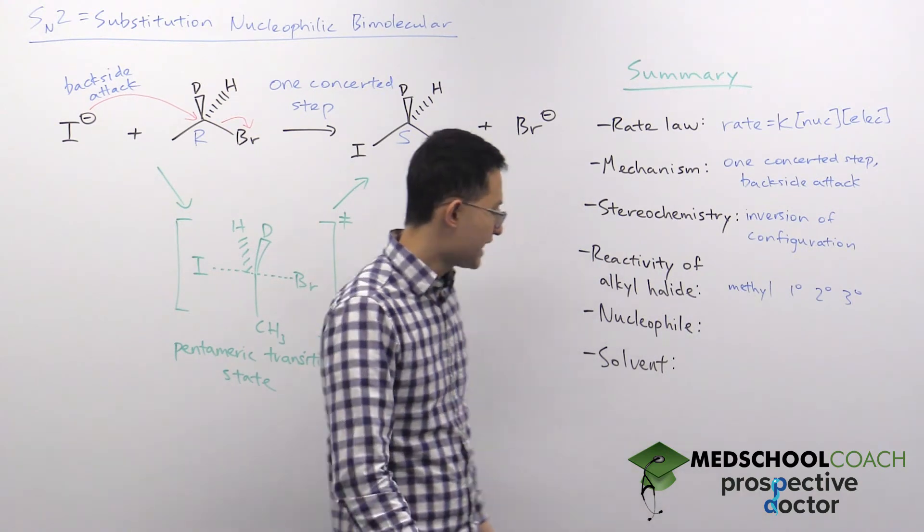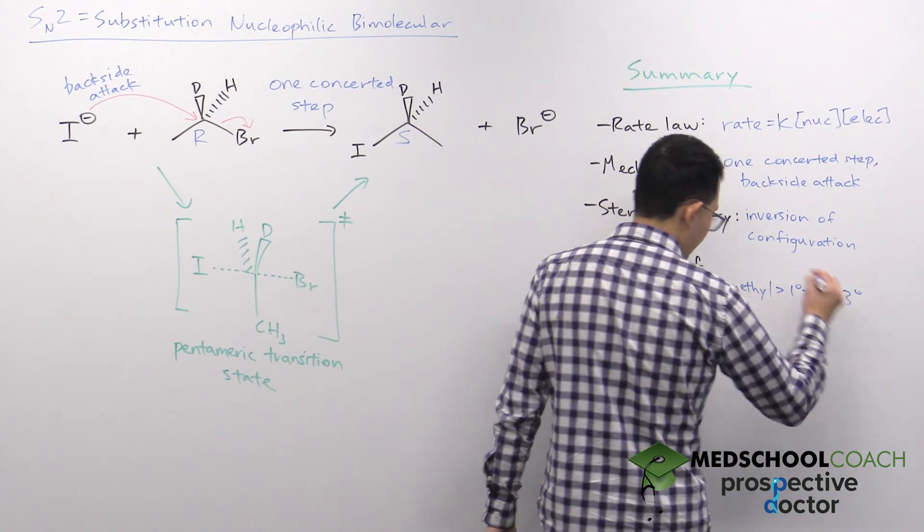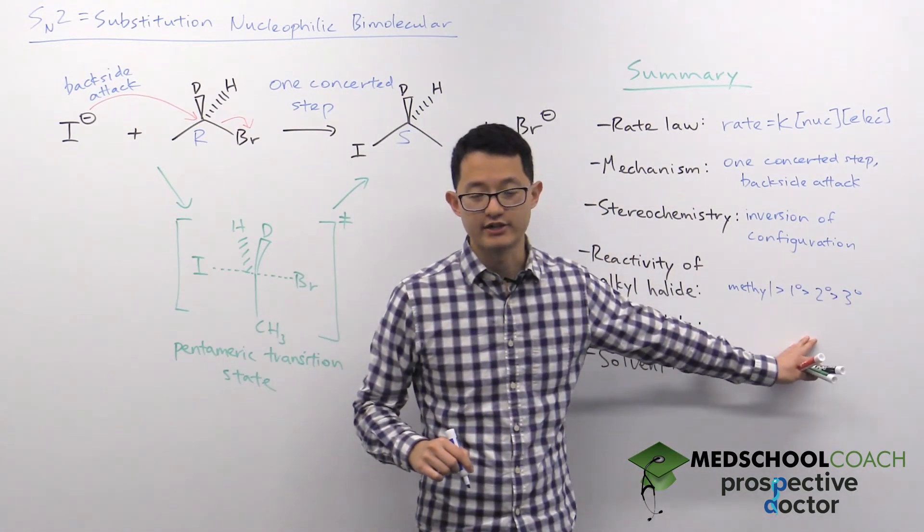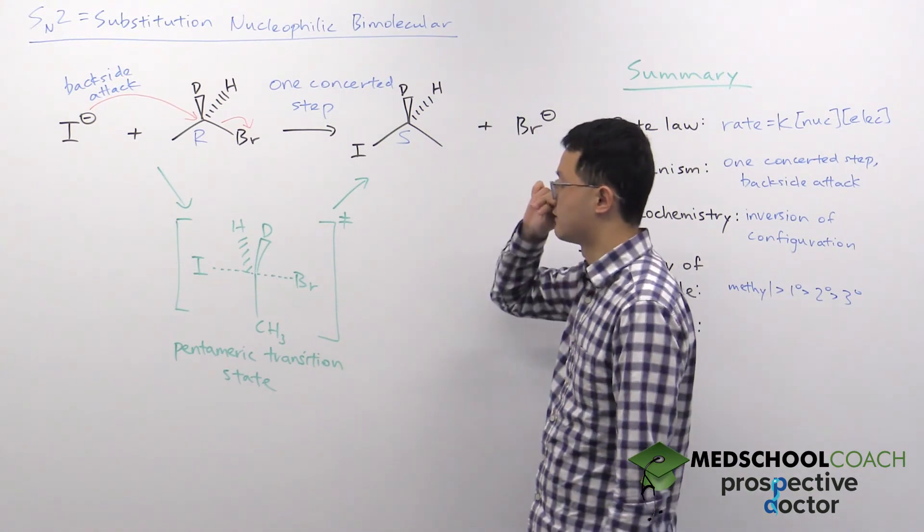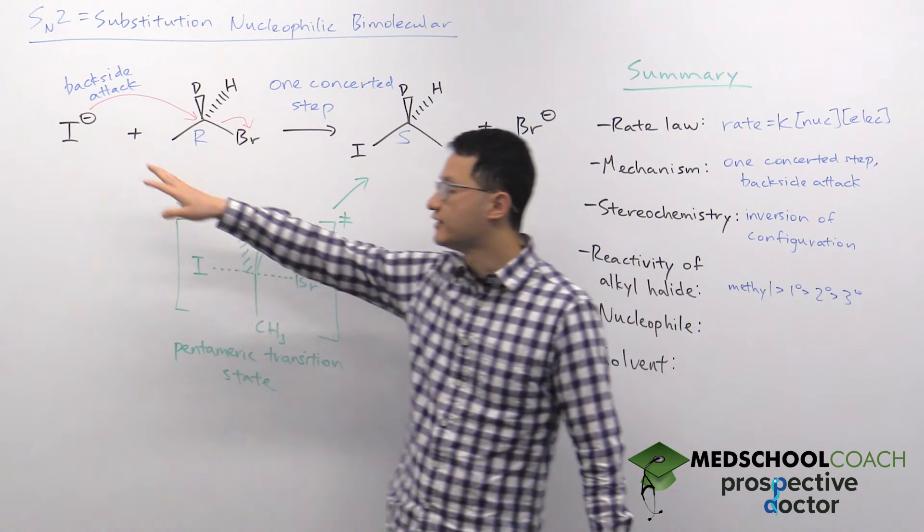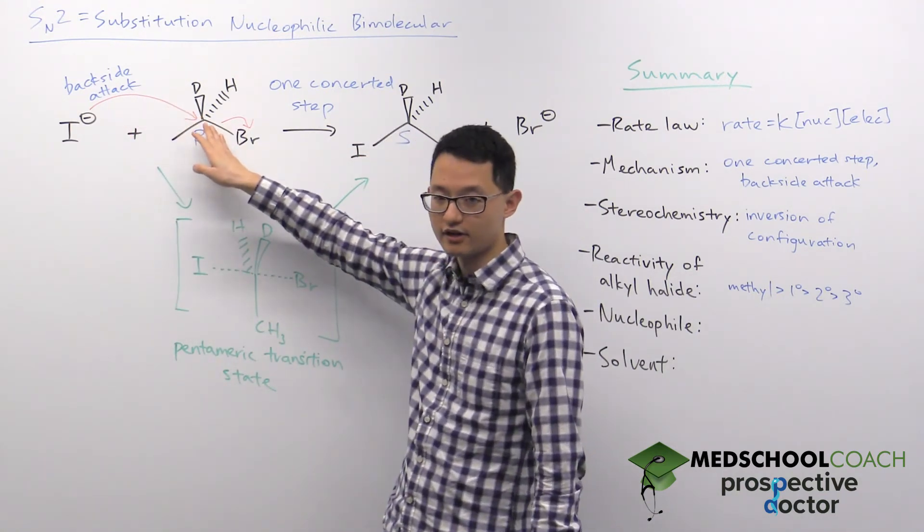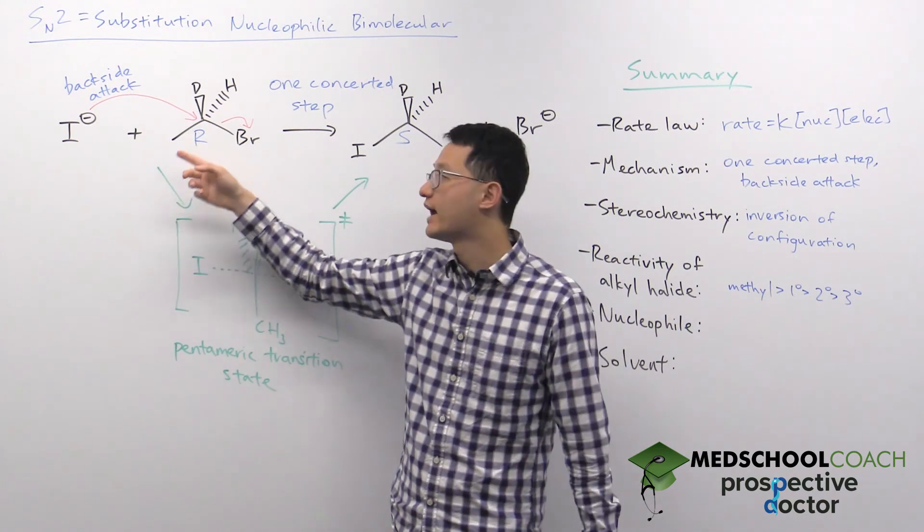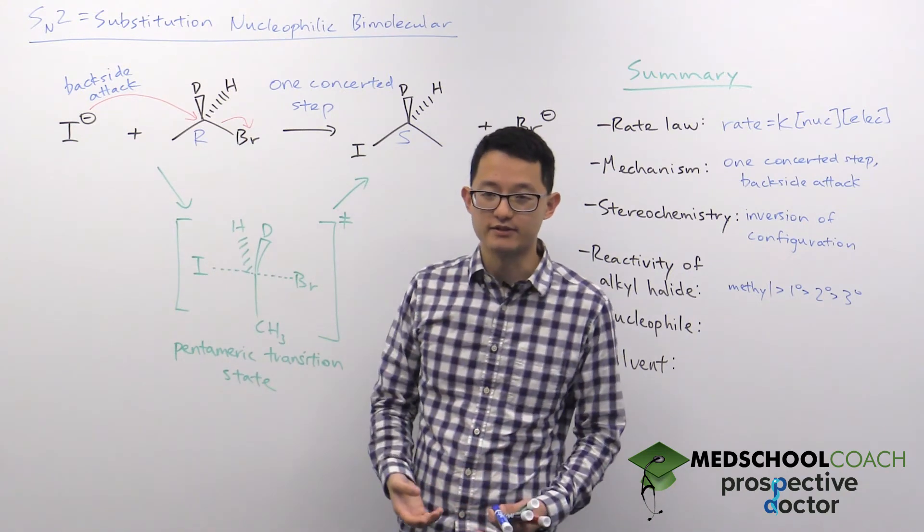Now we want to compare the reactivities, how fast each of these reactions proceed with SN2. And as it turns out, the fewer the substituents, the faster the reaction is going to be for SN2. And the reason why is because in order for SN2 to occur, our nucleophile needs to be able to make its attack onto the carbon.